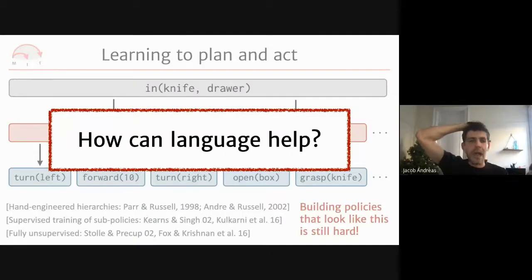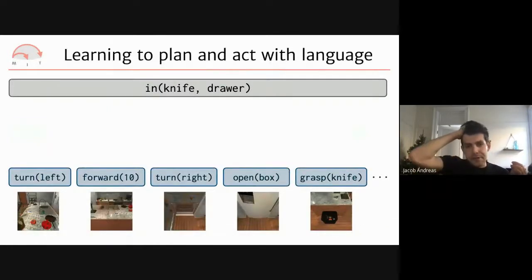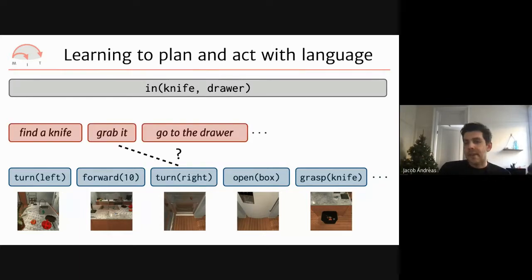How might language help? The approach uses language as a tool for training hierarchical models that gives control over high-level skills without requiring pre-commitment to specific skills or formal domain representations. Concretely: start with a dataset of demonstrations paired with low-level observations and actions, then ask people to annotate some demonstrations with instructions.